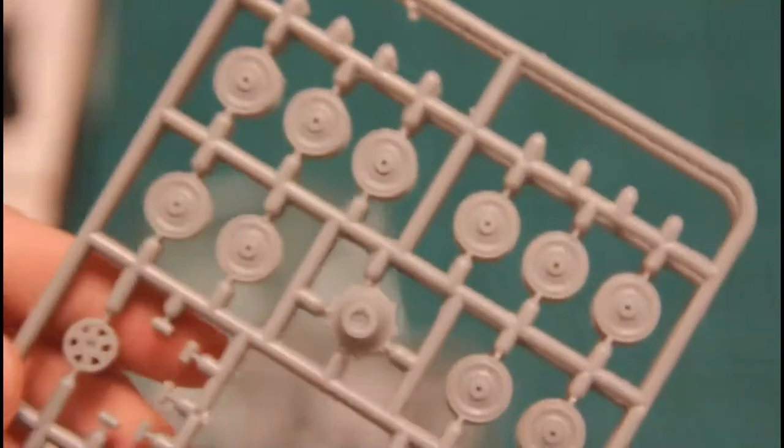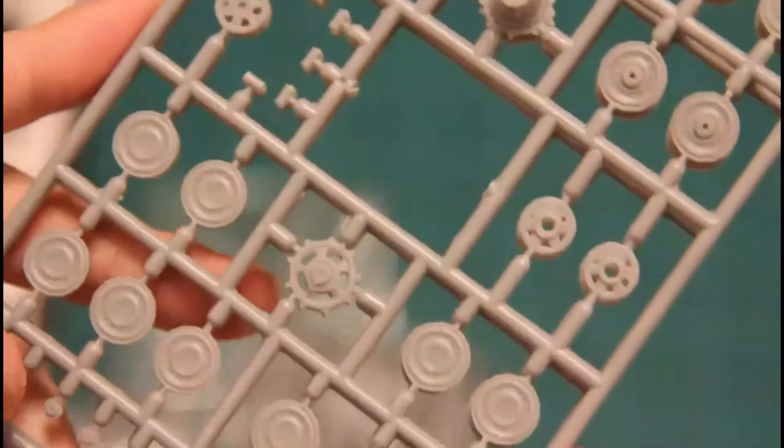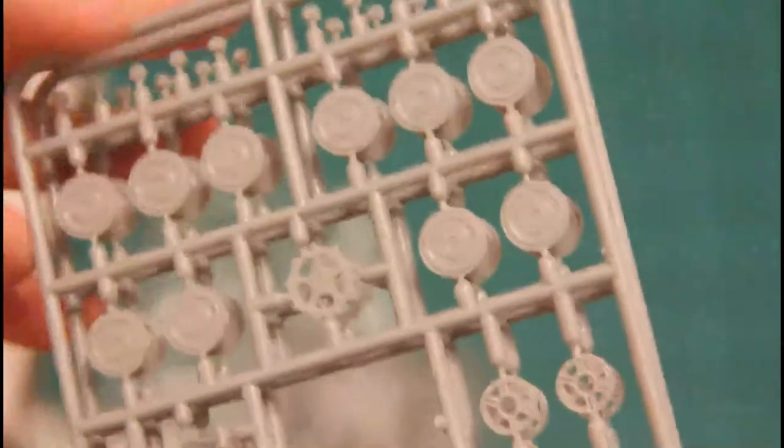Then we have two absolutely identical sprues which contain various wheels and drive sprockets. You can see them here and I hope you can guess that this tank had plenty of wheels, so you would have to deal with quite an impressive amount of paintwork on them.